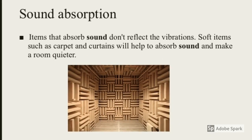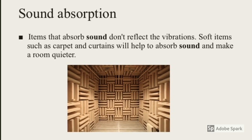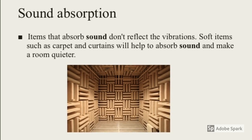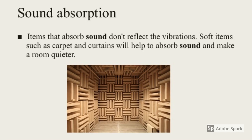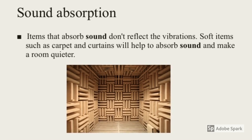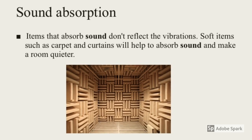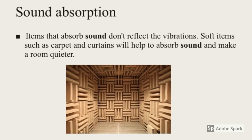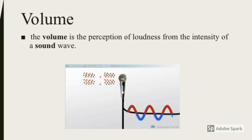Sound absorption: items that absorb sound don't reflect the vibrations. Soft items such as carpet and curtains will help to absorb sound and make the room quieter. For example, if you think about our classrooms, we have soundproof curtains that are big and very thick and black. Volume: the volume is the perception of loudness from the intensity of a sound wave.